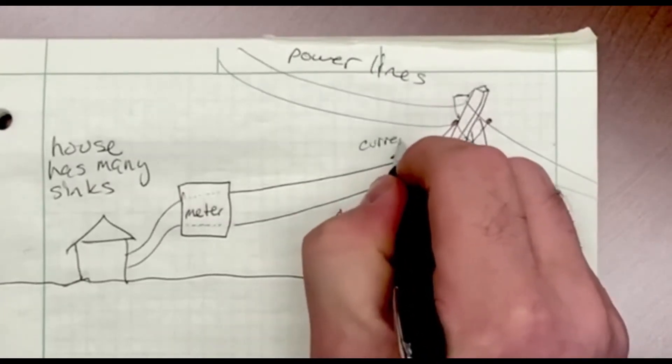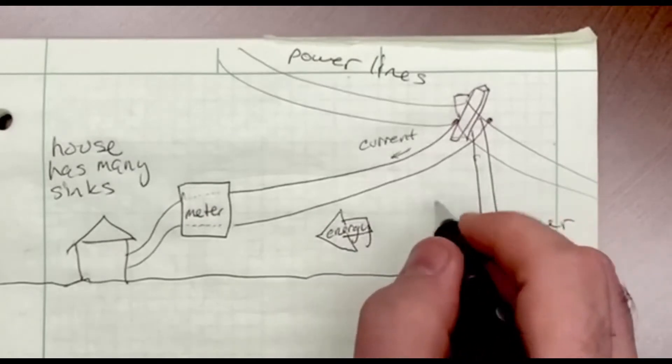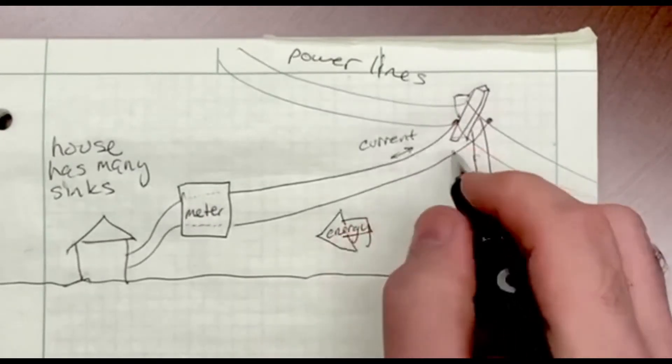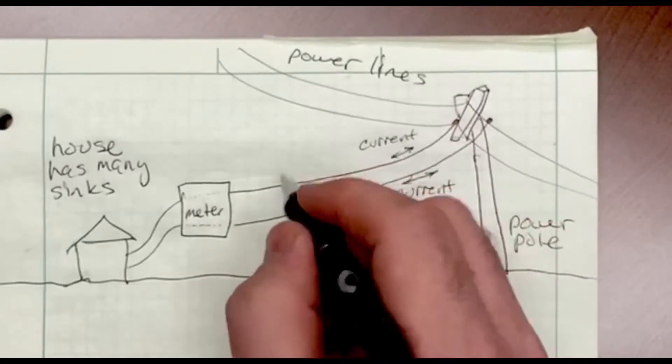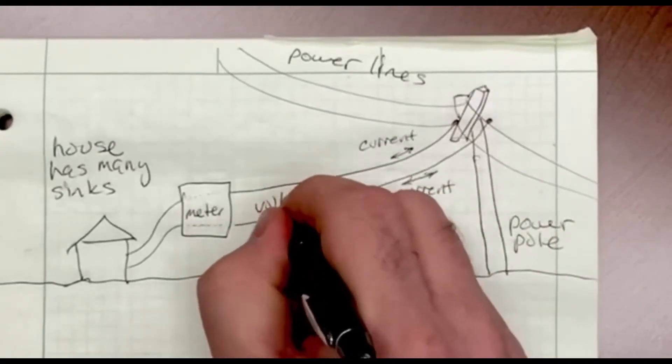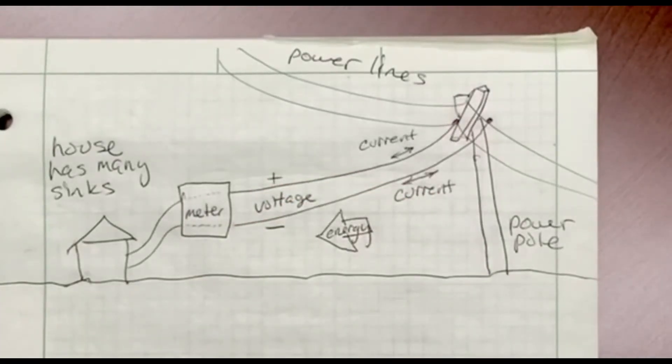My current is flowing in on a round-trip path using these two conductors, and it's also flowing back and forth because of the AC nature of the power delivery. I have a voltage that exists between those two wires.